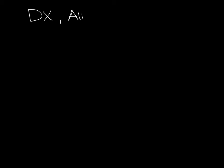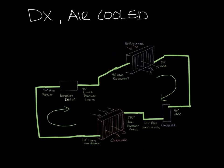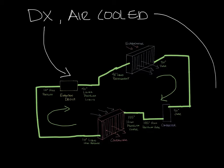What I drew out last week was a DX air-cooled system, so let's bring that back up. It's called direct expansion because we use the expansion and compression of the refrigerant to produce cooling, and it's air-cooled because we used a fan to draw air across the condenser to cool the refrigerant.